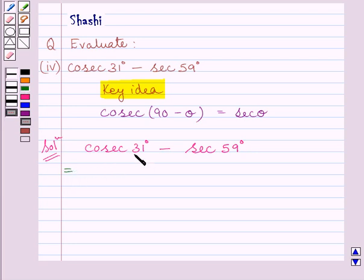So we can write cosec 31° as cosec(90° - 59°) minus sec 59°, where 90° - 59° equals 31°.